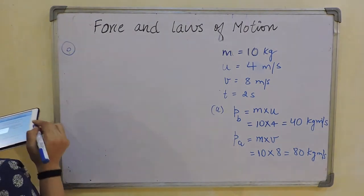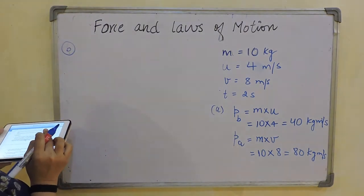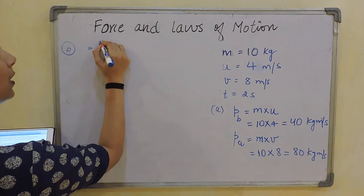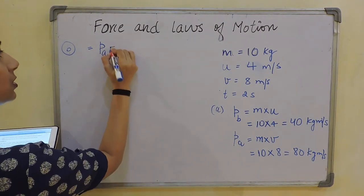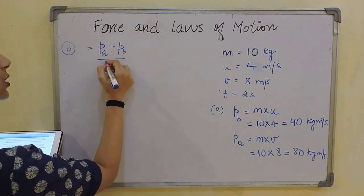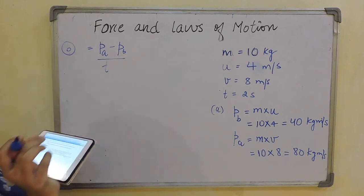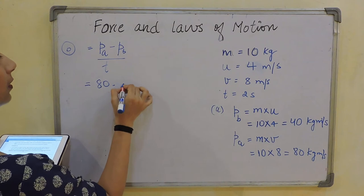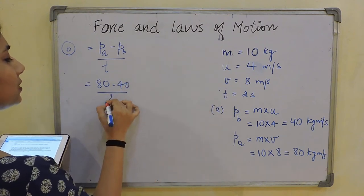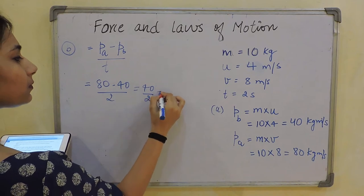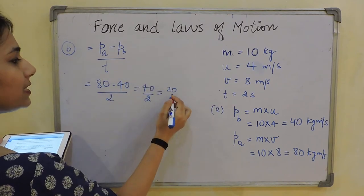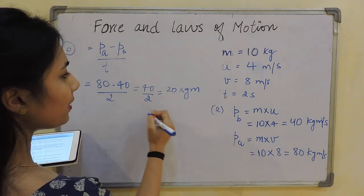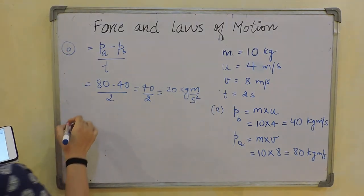For part B, gain in momentum per second: that means (P_after − P_before) divided by time = (80 − 40) / 2 = 20. The unit is kg·m/s per second, which is kg·m/s².